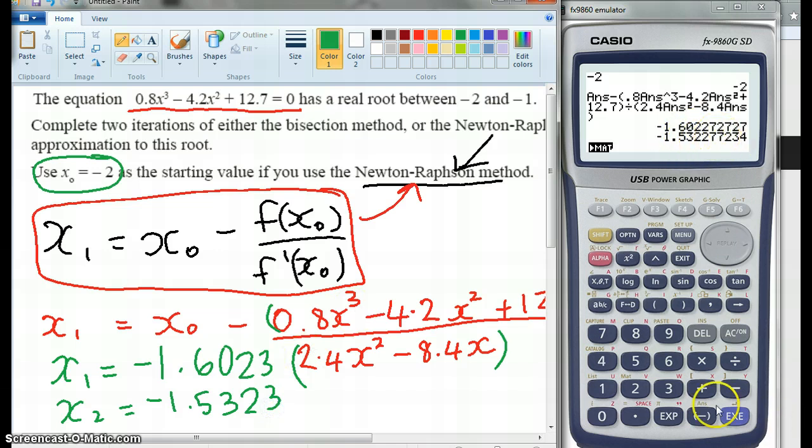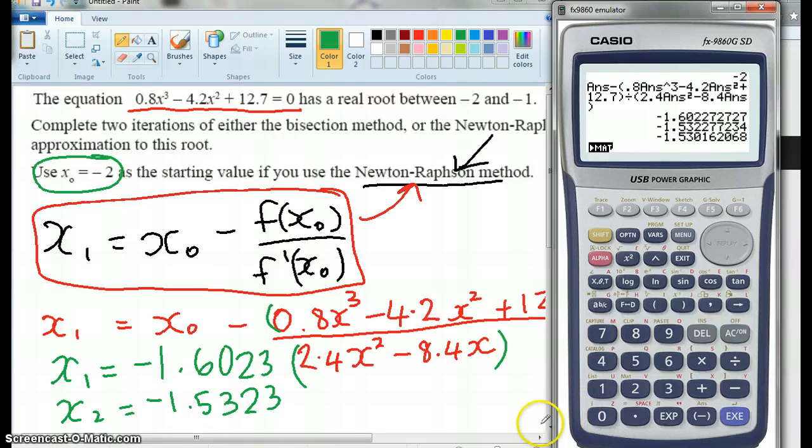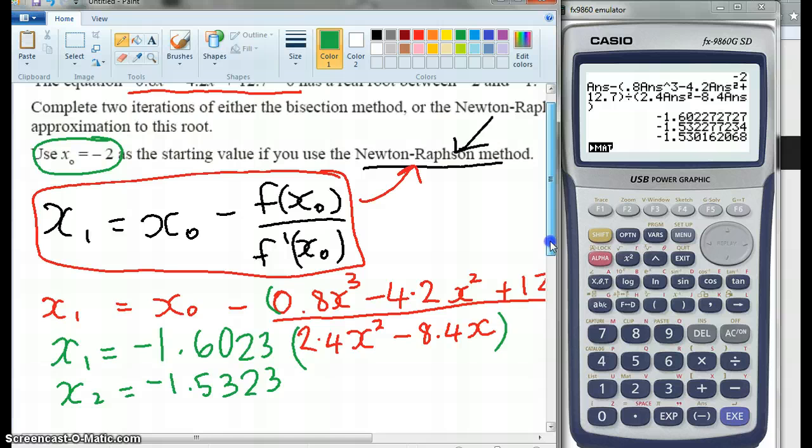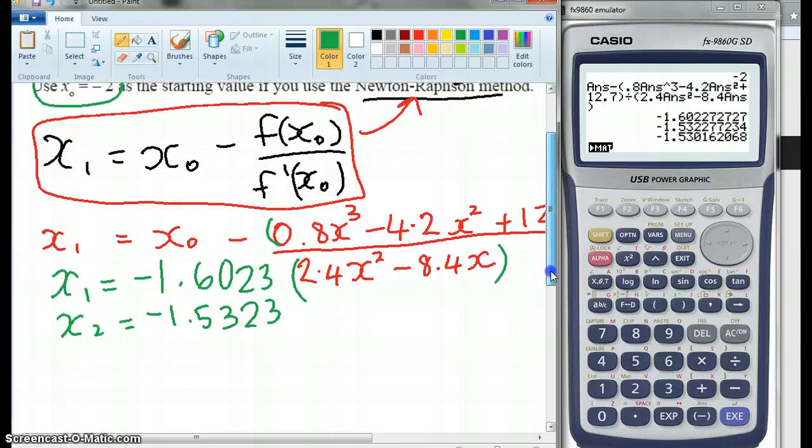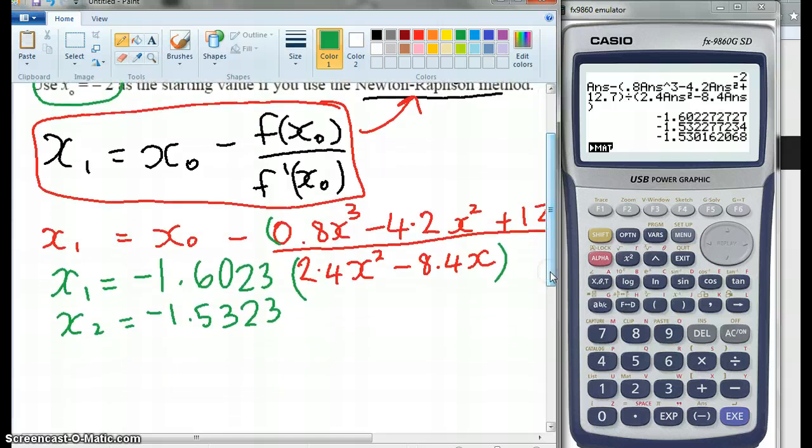Yep, with rounding. Execute. Moving down. It actually shows two iterations, so you've actually finished there, but I just want to see if we can keep going until we get convergence, so negative 1.5302.